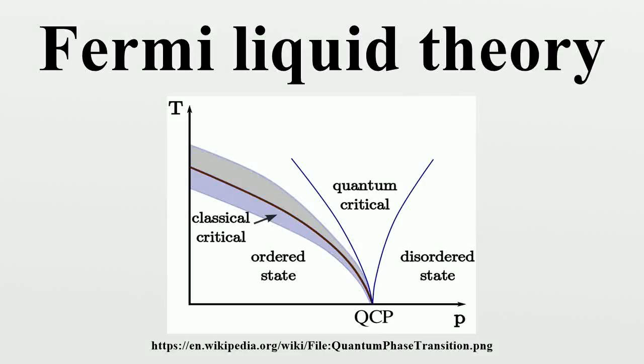Fermi liquid theory is a theoretical model of interacting fermions that describes the normal state of most metals at sufficiently low temperatures.